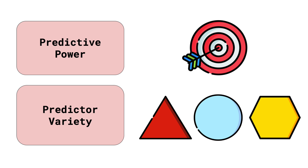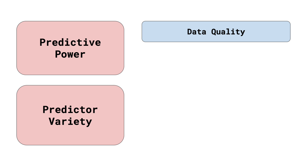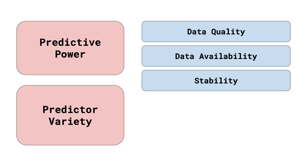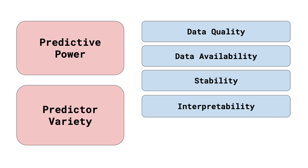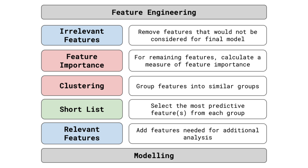The most important is predictive power and predictor variety. But there are also other considerations that may result in a feature being added or removed. These include data quality and availability, feature stability, interpretability, and law or ethics. We end by discussing how all of these considerations come together in a feature selection framework.